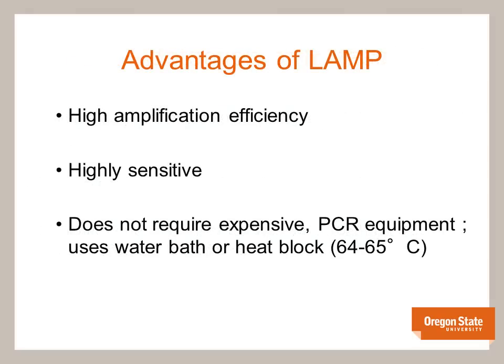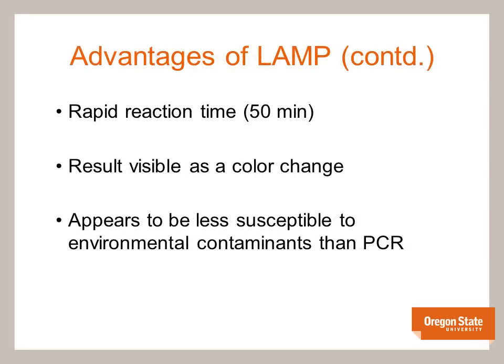LAMP has a high amplification efficiency, which means it's very sensitive — at least as sensitive as PCR. Our detection level of Rhodococcus fascians in infected tissue is around 1,000 colony-forming units. This is well below the minimal concentration of 25,000 colony-forming units needed for symptom development, which implies that we are able to detect Rhodococcus fascians at the earlier stages of infection. LAMP is also very specific, and because it requires a single reaction temperature, there is no need for a thermocycler — only a water bath or heat block. Amplification only takes 50 minutes to complete, a gel is not needed, results are clearly visible as a colour change, and LAMP seems to be less susceptible to environmental contaminants such as plant metabolites compared to PCR.